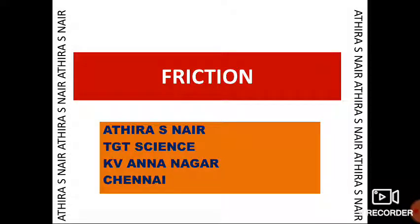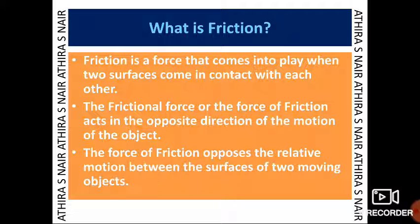Chapter 12: Friction. We discussed about friction in the chapter force and pressure, where we learnt that friction is a contact force and it is an opposing force. Friction opposes the relative motion between two surfaces in contact. It is a force that comes into play when two surfaces come in contact with each other, and it acts in the opposite direction of the motion of the object.